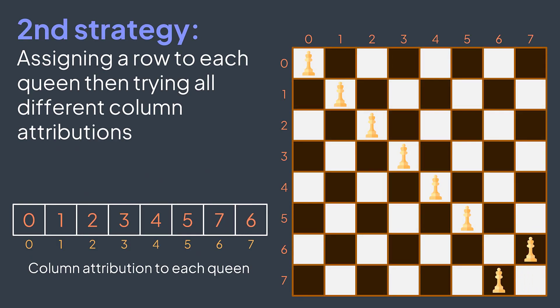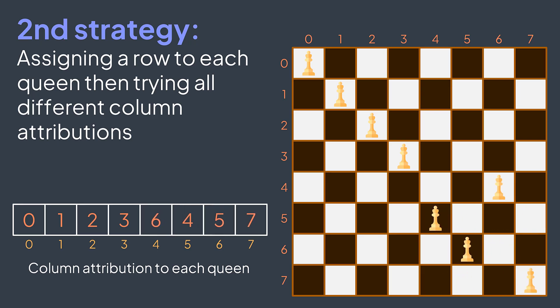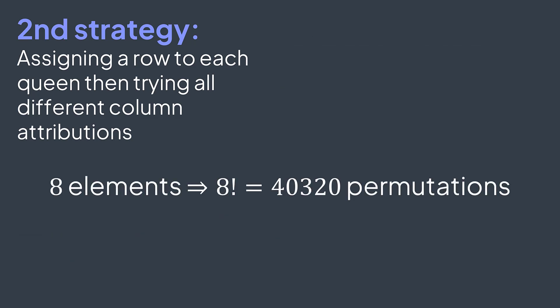Then we remember that two queens can't be on the same row or column, so we work with permutations. We assign a fixed row to each queen and permute the column assignments — permuting the array [0, 1, 2, 3, 4, 5, 6, 7]. With eight elements we get 8 factorial permutations, which is 40,320 — far less than the previous solution. These permutations already satisfy the no-same-row-or-column constraint, so if the diagonal constraint didn't exist, all permutations would be valid.